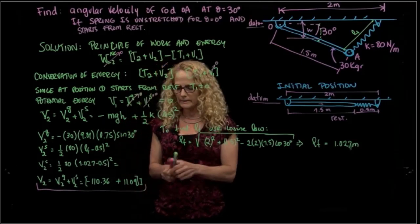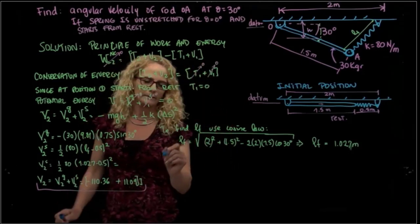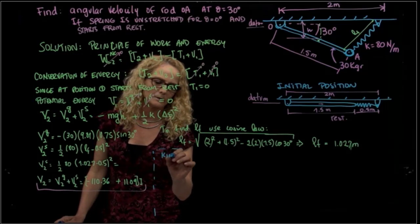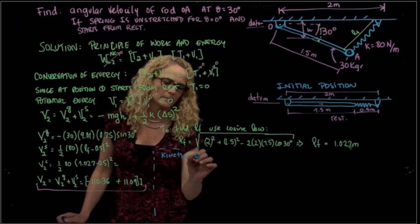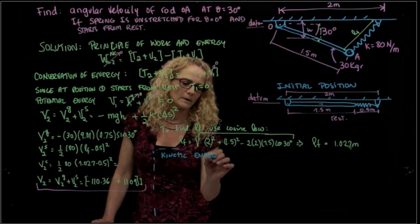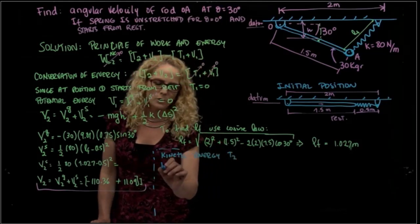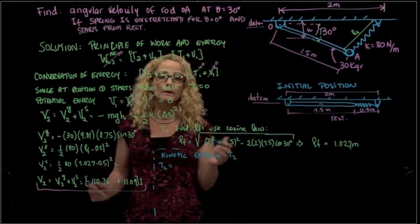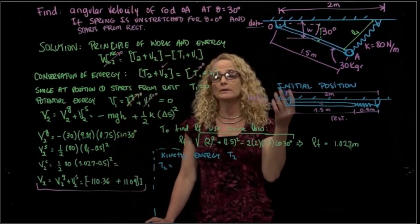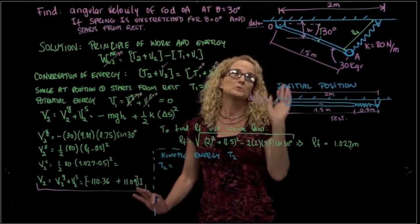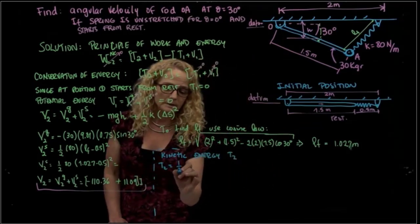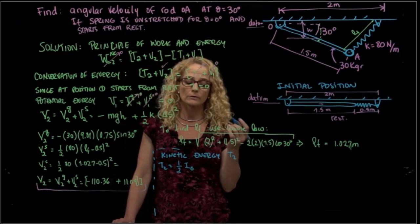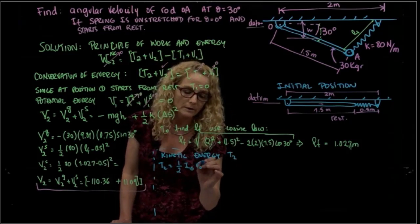Now we have to find the kinetic energy, the kinetic energy in the second position. So we can calculate the kinetic energy at any point. Since O has zero velocity, I like to use that point, and I know that there's 1/2 the inertia, mass moment of inertia times the velocity of that point.